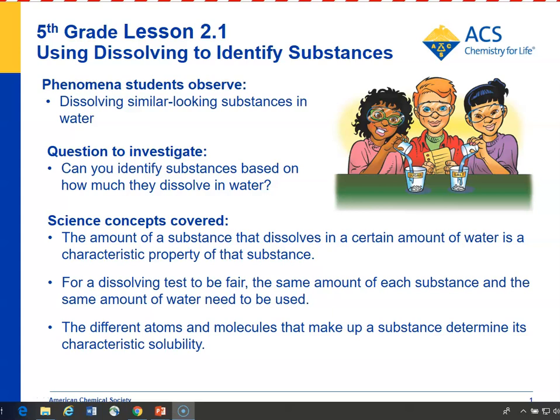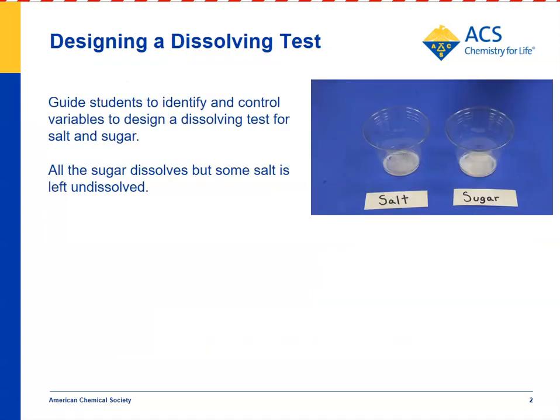In lesson 2.1, students compare the dissolving of salt and sugar in water. The idea is to see whether different substances dissolve to a different extent. Students will discover that salt and sugar have a characteristic degree to which they dissolve in water, and that substances have a characteristic solubility — meaning you can identify a substance based on how much it dissolves in water.